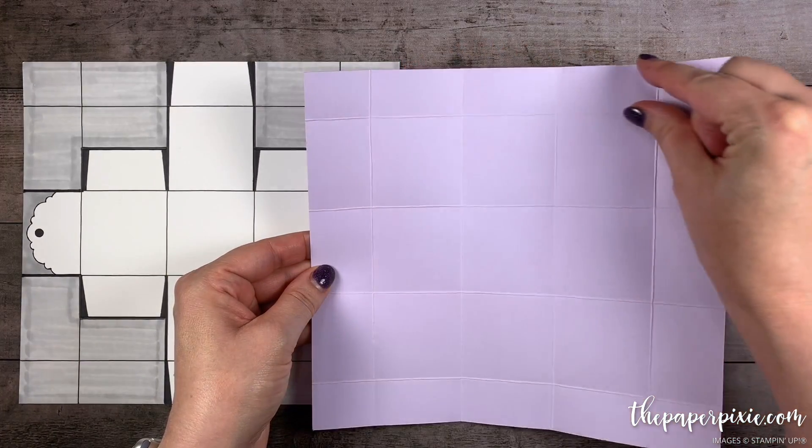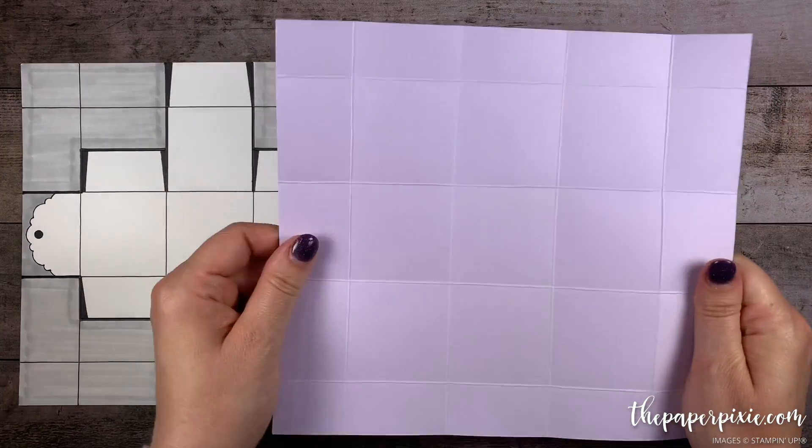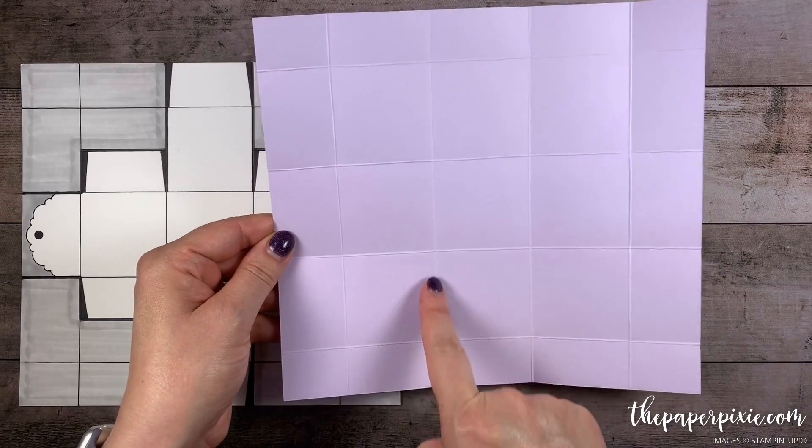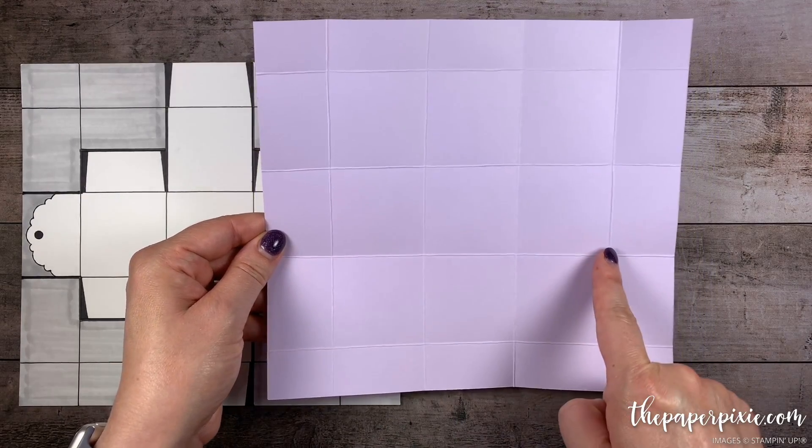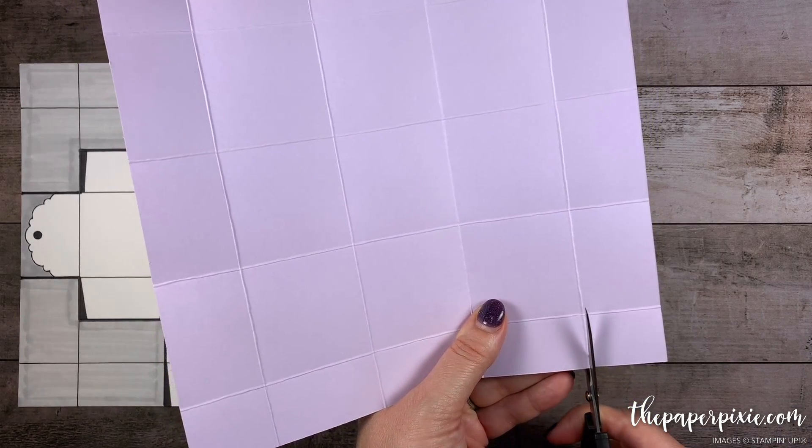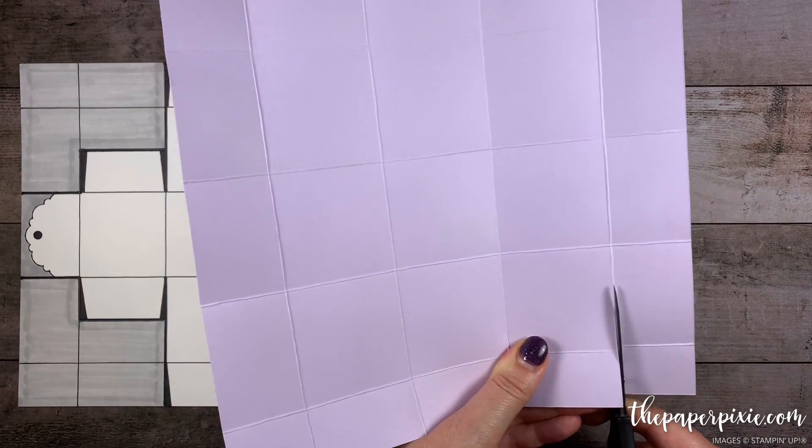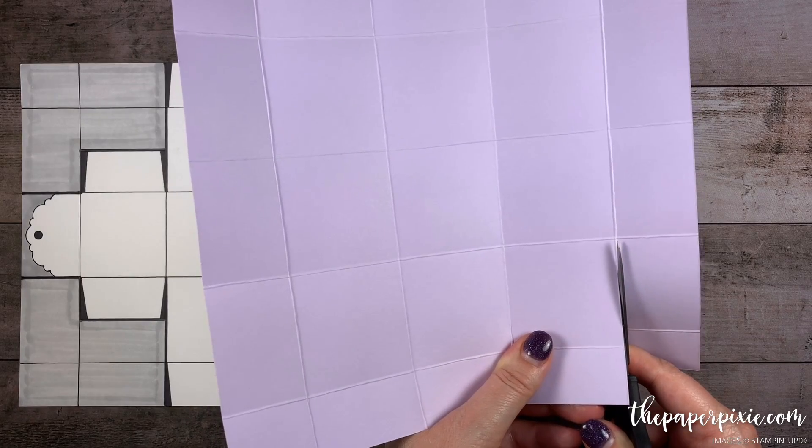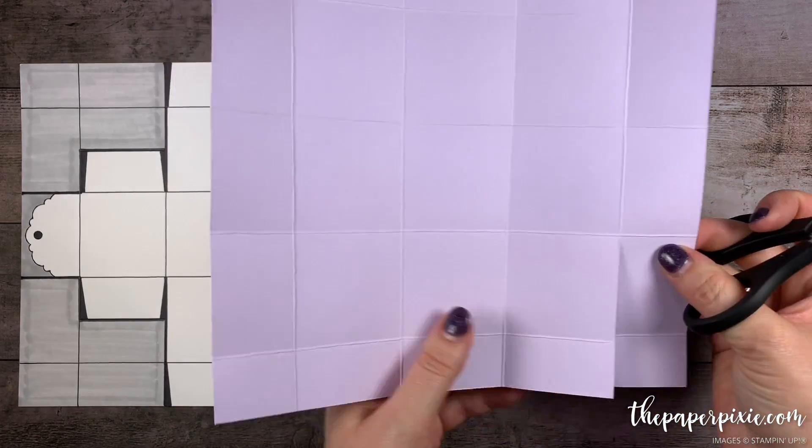That's where you've got the 1 inch section along the top. And I'm going to come up and cut up each of these vertical score lines stopping at the second horizontal score line. So I'm just going to cut up all the way these 4 vertical score lines stopping at the second horizontal.